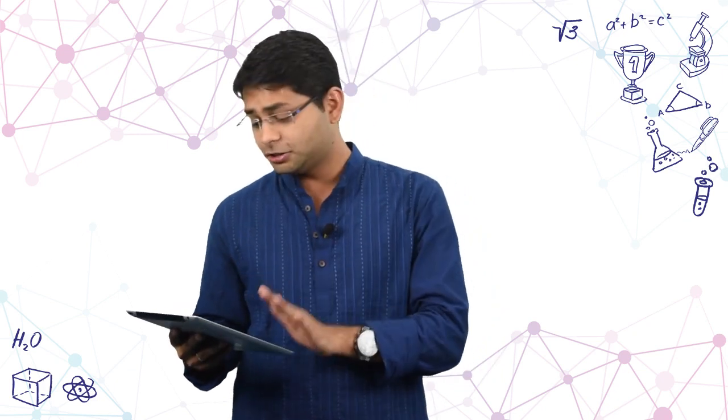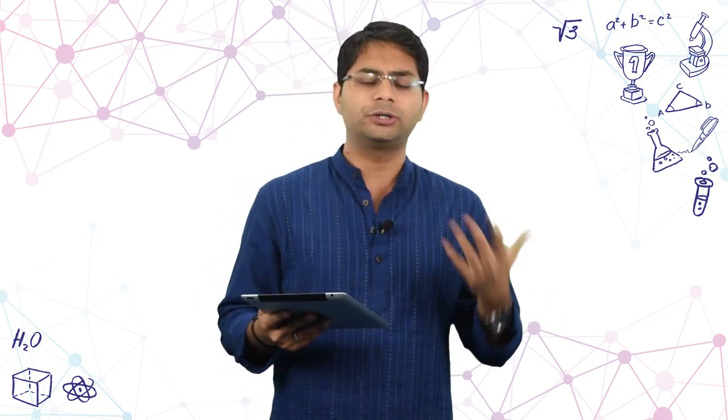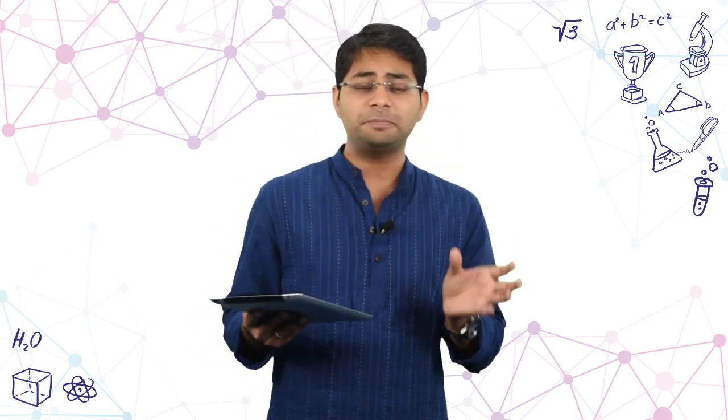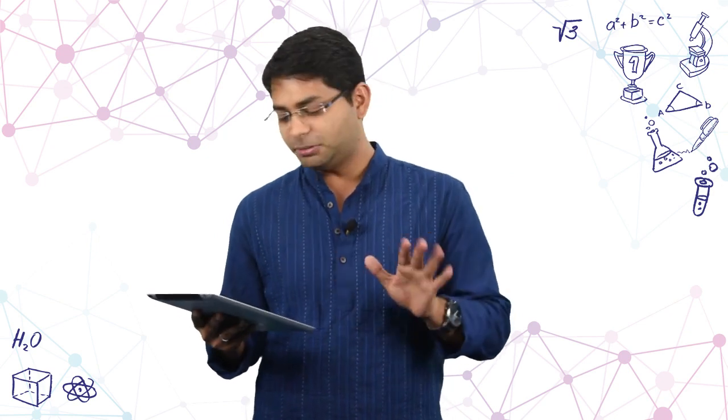Moving on to inorganic chemistry — generally chemical bonding is the biggest portion, but this time two extremely easy questions from paramagnetic nature and isoelectronic species were asked. Coordination compounds, from which questions are generally asked about IUPAC nomenclature, hybridization, and isomerism, was this time clubbed with mole concept, making the resulting question extremely easy. Bearing just two questions, the rest of inorganic chemistry was extremely easy and fairly doable.